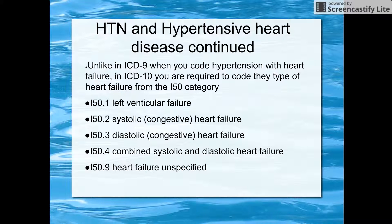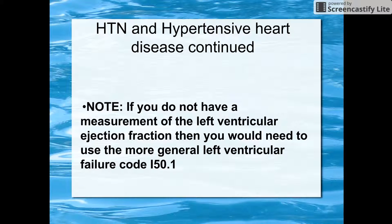In ICD-10, when you code hypertension with heart failure, you must also code the type of heart failure using codes I-50.1 through I-50.9. Be sure you pay attention to the note. If you have an ejection fraction score, you can use it to code; but if not, you use the more general code I-50.1.